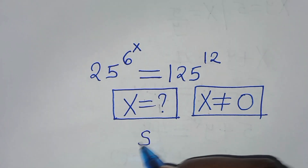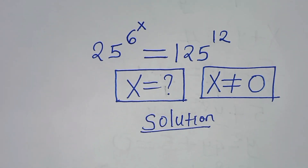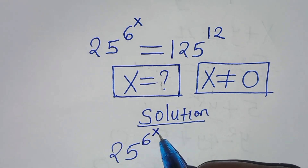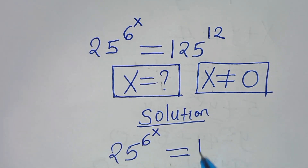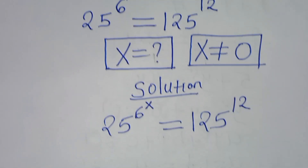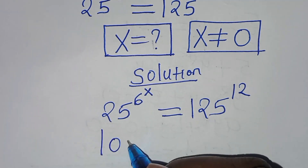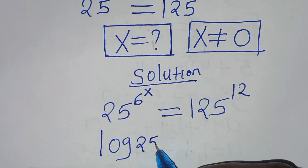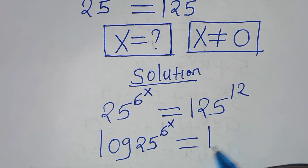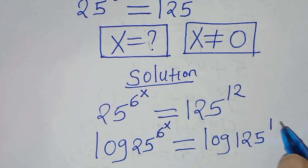Let's present the solution from here. We have 25 raised to the power of 6 raised to the power of x, and this is equal to 125 raised to the power of 12. The first thing to do here to solve for x, we introduce logarithm on both sides. So we have log of 25 raised to the power of 6 raised to the power of x, and this is equal to log of 125 raised to the power of 12.